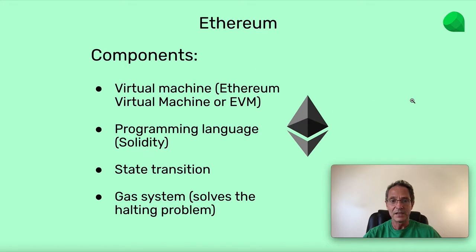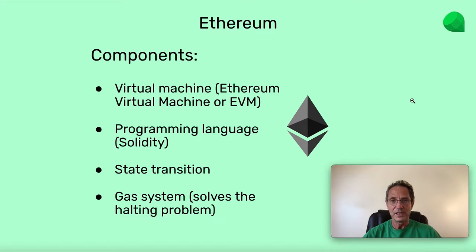The way Vitalik achieved this was by adding four things. First, the virtual machine. The virtual machine is basically a software component of Ethereum that can execute many operations, very similar to a normal computer, and this software component is replicated in all the machines of the network. It's called the Ethereum Virtual Machine, or EVM. The other thing Vitalik added was a programming language called Solidity. Of the 30 million developers in the world, a very large share know how to use JavaScript, and Solidity is basically JavaScript modified a little to be able to work on a blockchain like Ethereum.